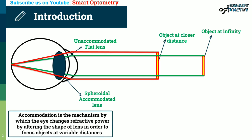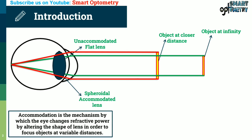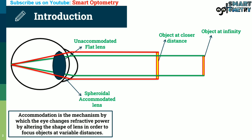Accommodation is the mechanism by which the eye changes refractive power by altering the shape of the lens in order to focus objects at variable distances.